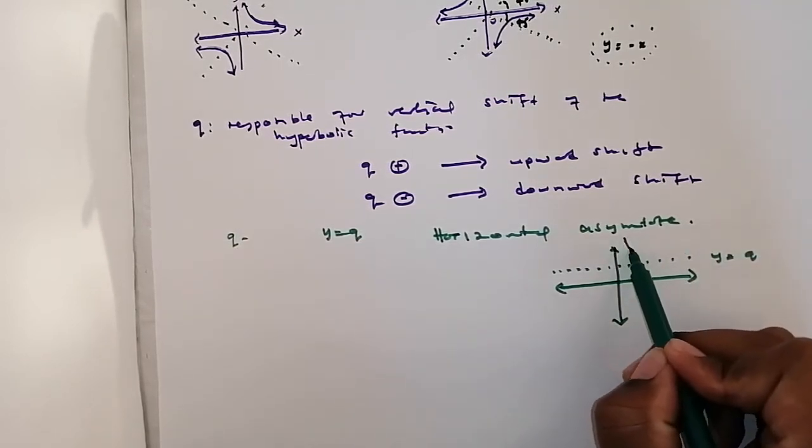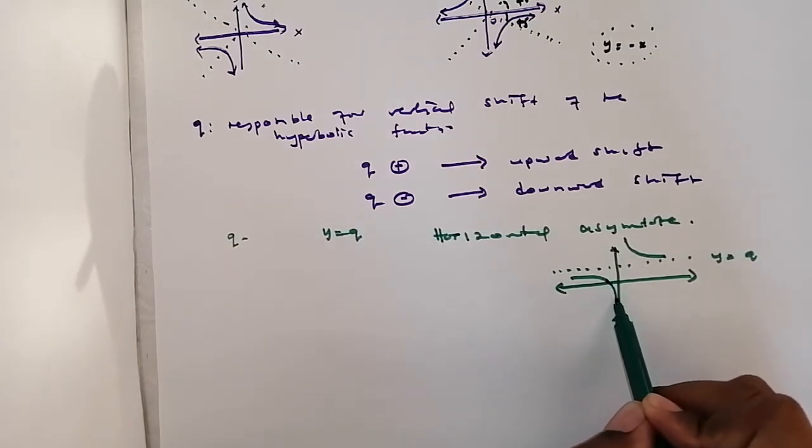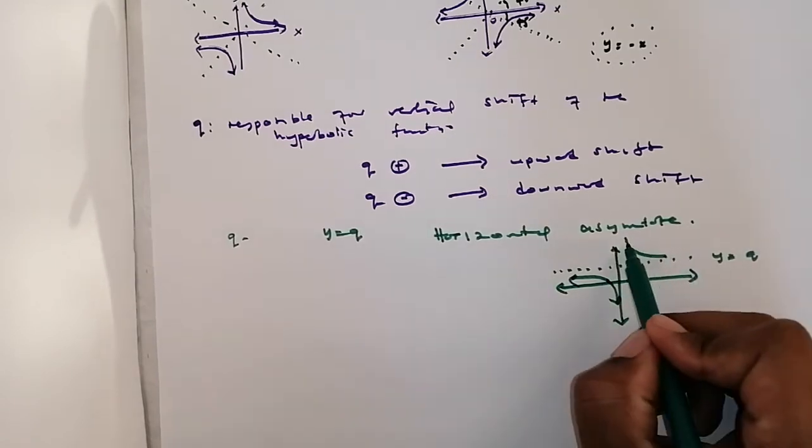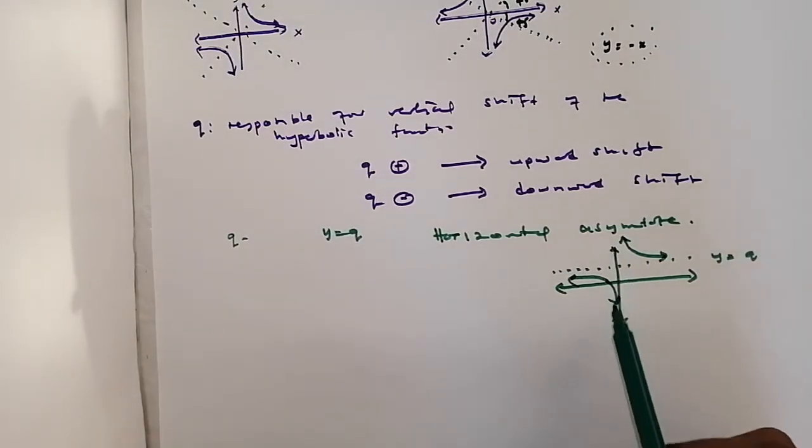So we have a line like, let's say, here, y equals Q. And our function maybe is like something like this and something like this. But it never touches this line. Because we have limited ourselves to vertical shifts.